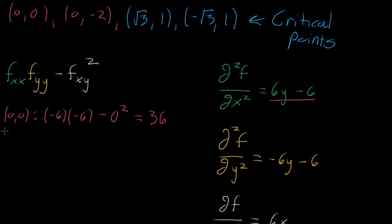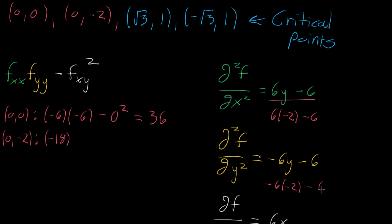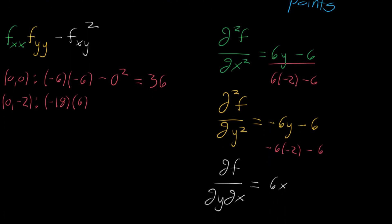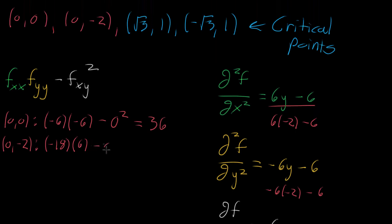At the point (0,-2): plugging y = -2 into f_xx gives six times negative two minus six, that's negative 12 minus six, so negative 18. Plugging into f_yy gives negative six times negative two minus six, which is positive 12 minus six, so positive six. The mixed partial with x = 0 is again zero. So we get negative 18 times 6 minus zero squared, which is negative 108.